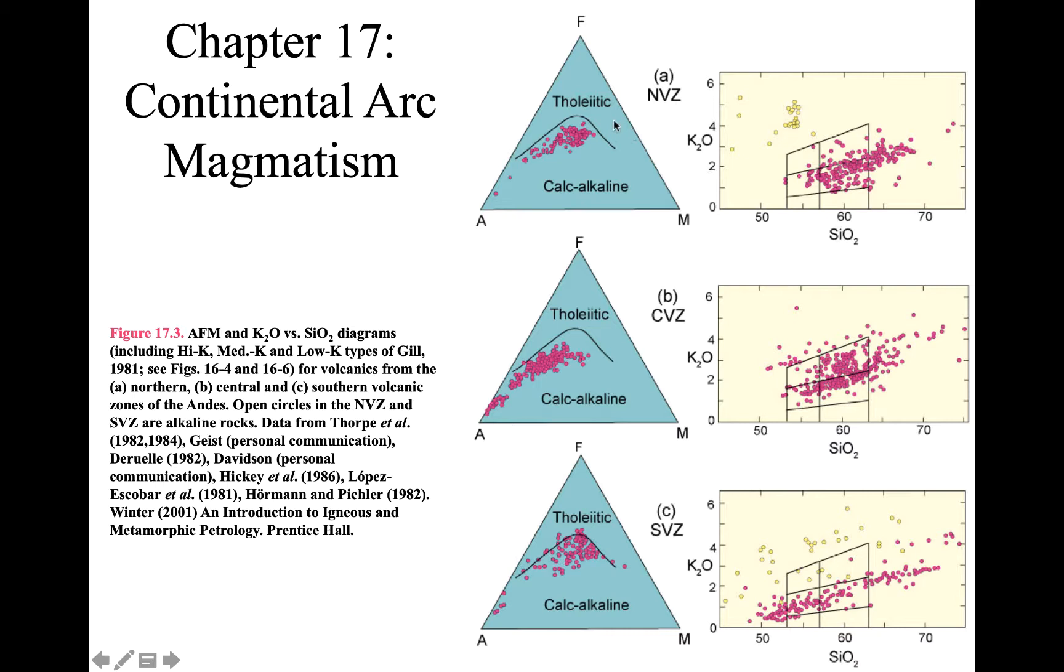Most oceanic rocks, Hawaii, mid-ocean ridges, Iceland, most will plot in the tholeiitic field, but they can plot in the calc-alkaline field also. Most subduction related materials will fall in the calc-alkaline field, but sometimes they are tholeiitic also. So we'll make some comparisons of the Monocraters.